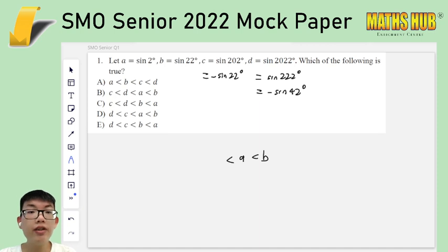We also know that sine is increasing from 0 to 90 degrees. So A is less than B. And for the other two, we know that sin 22 degrees is smaller than sin 42 degrees. So negative of sin 22 degrees should be larger than negative of sin 42 degrees. So the order would be D, C, A, B, which is option D.